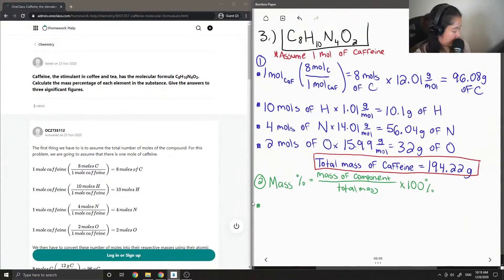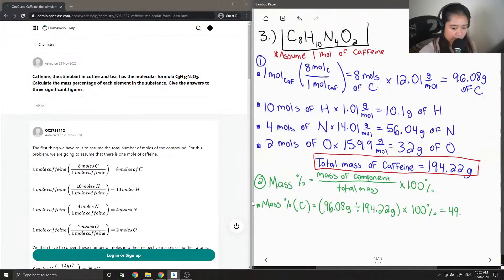So first let's do the mass percent of carbon. The mass of carbon was 96.08 and we're going to divide by the total mass of caffeine which is 194.22, multiply this value by 100 gives us a percentage of 49.47%.